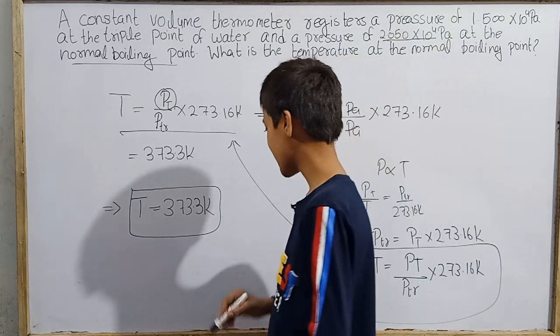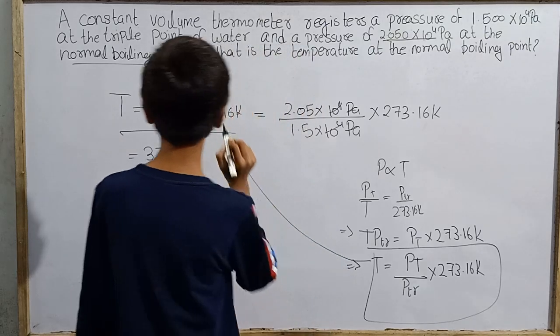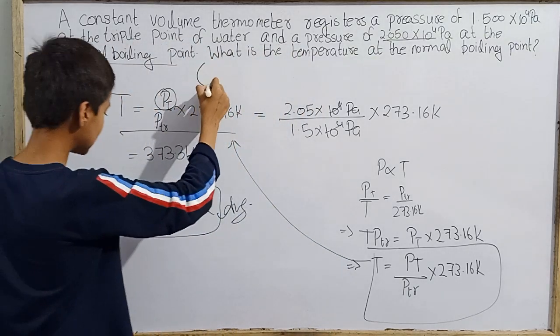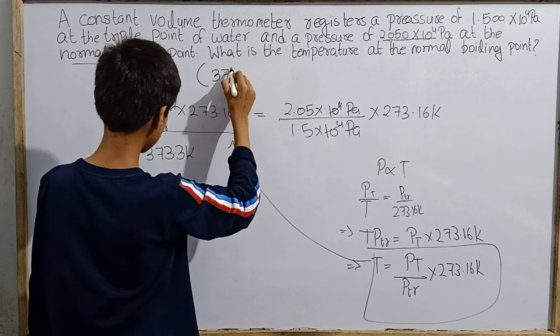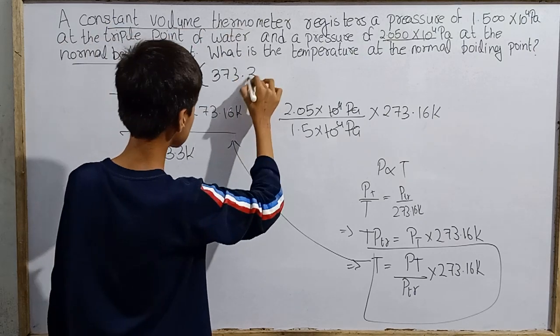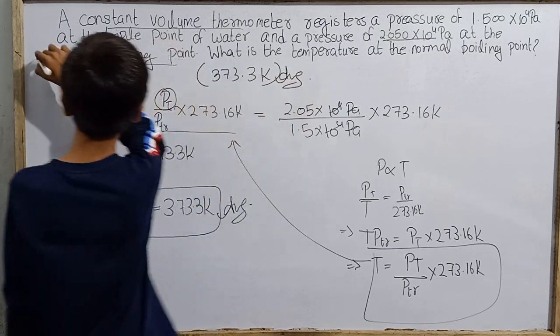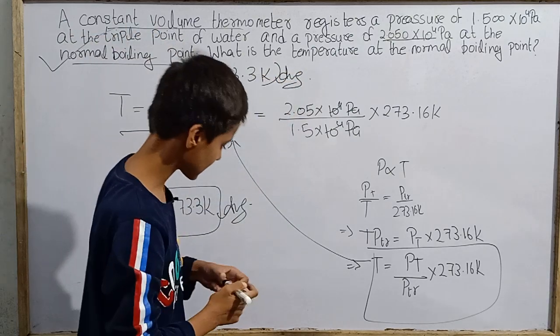So this is finally our answer to this question. We find that the temperature at the normal boiling point registered by this constant volume thermometer will be 373.3 Kelvin. Our final answer and hence the problem solved.